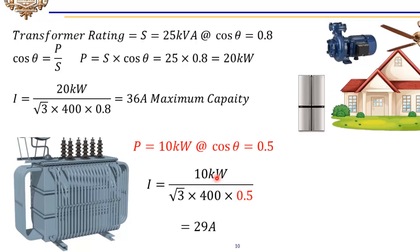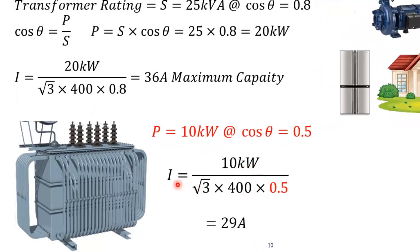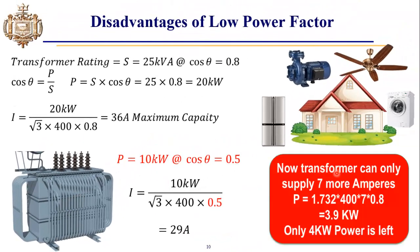Again, by using the three-phase power formula, we can see that this house is drawing 29 amperes from this transformer. The transformer can now supply seven more amperes because the maximum capacity is 36 amperes and one house is drawing 29 amperes. If we convert these amperes into the total power that a transformer can supply, this comes out to be 4 kilowatts.